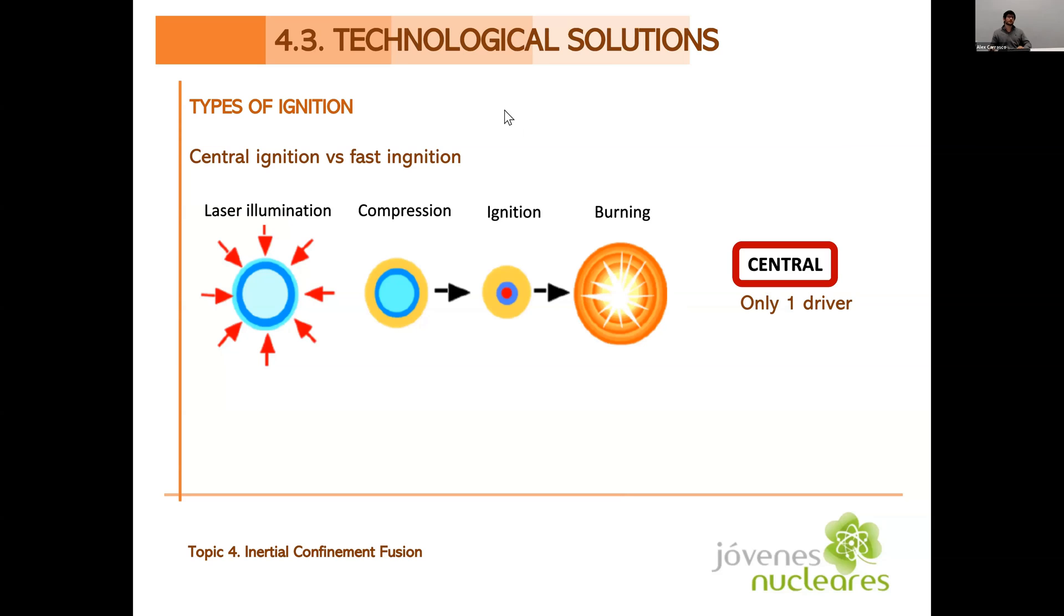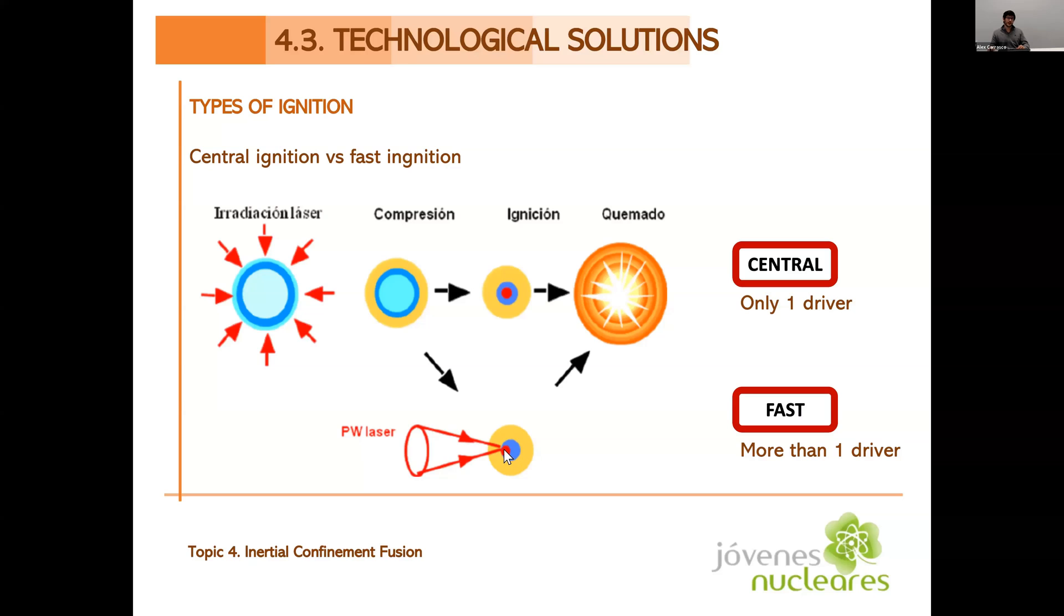The second difference that we want to make in technological solutions is the types of ignition that we can have. We can also have two types of ignition, we can have central ignition, which is what we discussed before with only one driver. We only have one energy driver, the laser that shines on the capsule and produces the burn, the ignition and the burning. Or we can have fast ignition where we have more than one driver. We will have a first, the laser that compresses the capsule in central ignition. And then we will have a second laser that will start and will create the hotspot in the capsule and it will burn in this way. So you have a second laser that's like the spark, the spark that creates ignition.